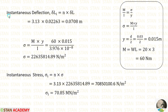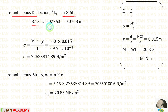Now let us calculate the instantaneous deflection. The formula is N into delta L. We have already calculated the load factor N as 3.13, and the static deflection as 0.02263 meter. Finally, we get the instantaneous deflection equal to 0.0708 meter.